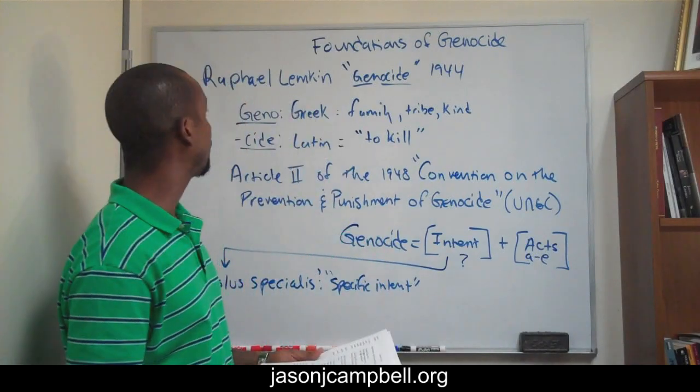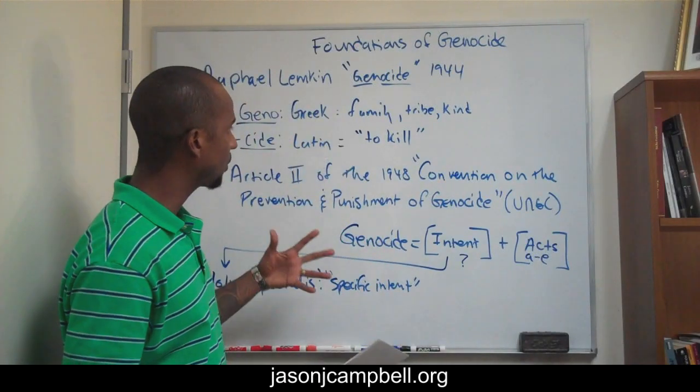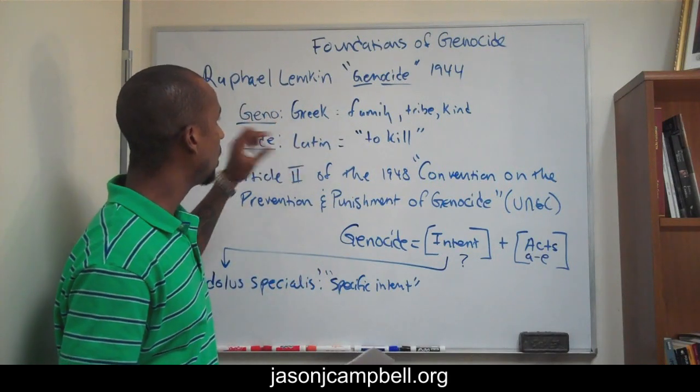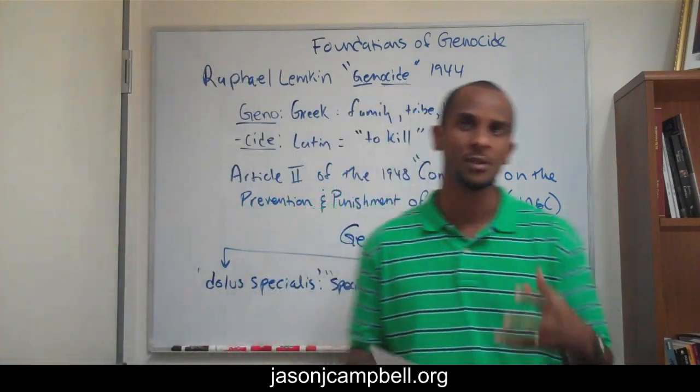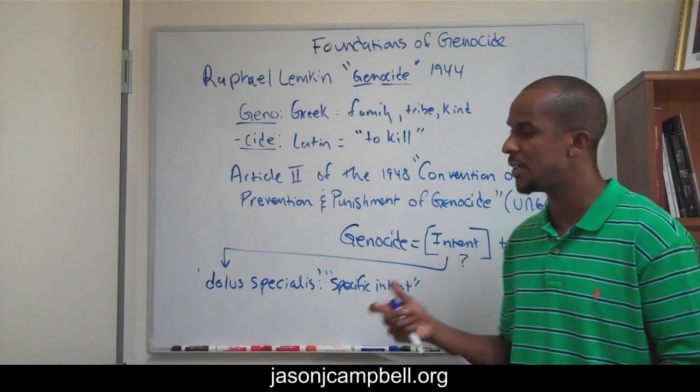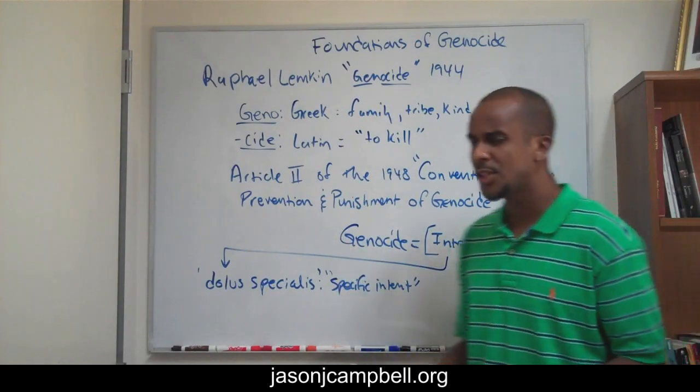What we have should be sufficient to have a very introductory account of genocide. We understand the etymology of genocide, that Raphael Lemkin discovered and coined the term genocide, and how this notion of genocide has become codified within law. We know that genocide is a coupling of both the specific intent — the dolus specialis — coupled with Acts A through E in Article II of the UNGC.